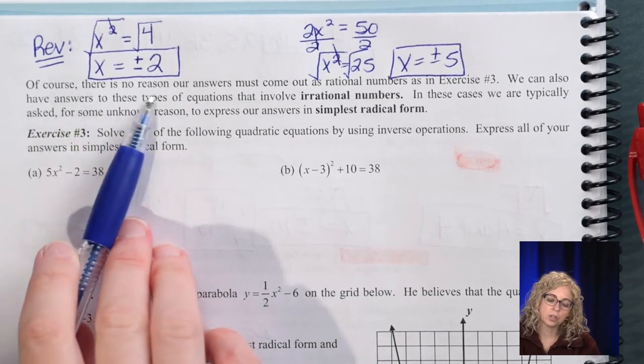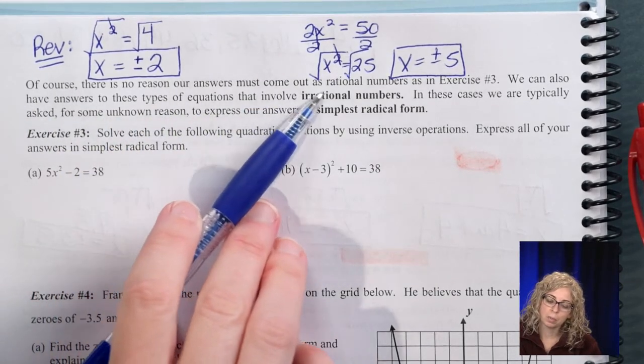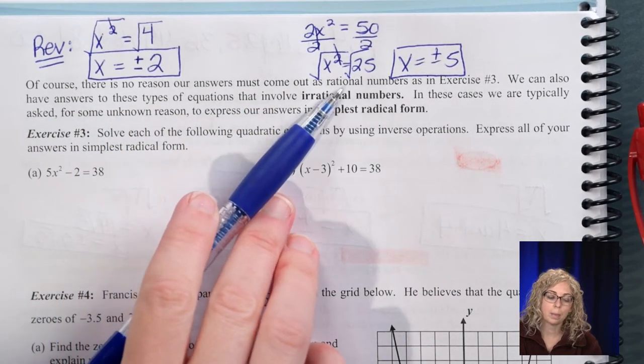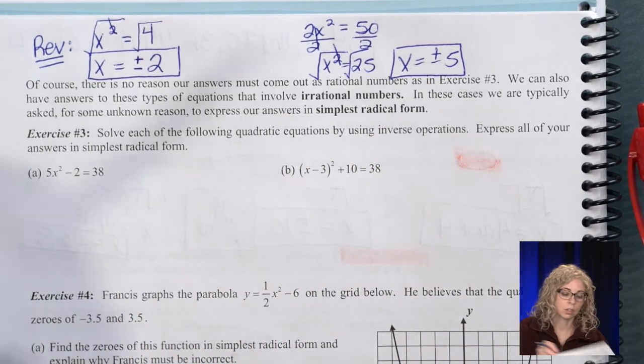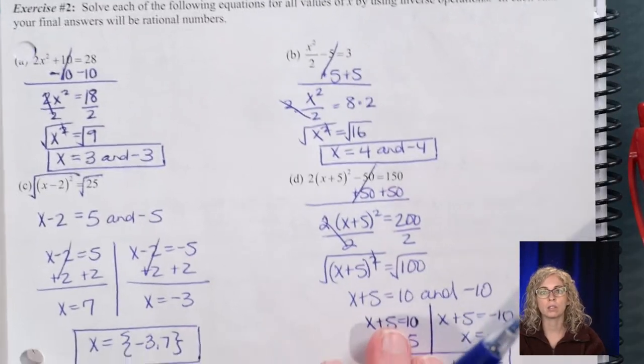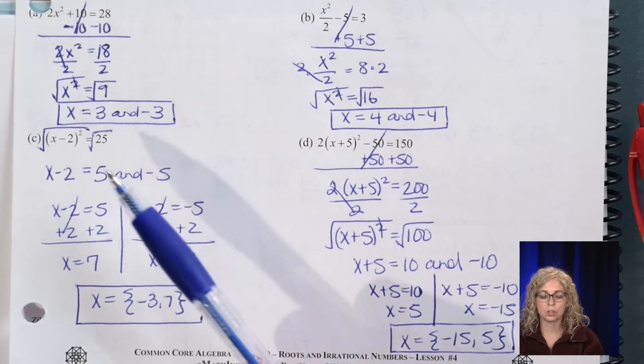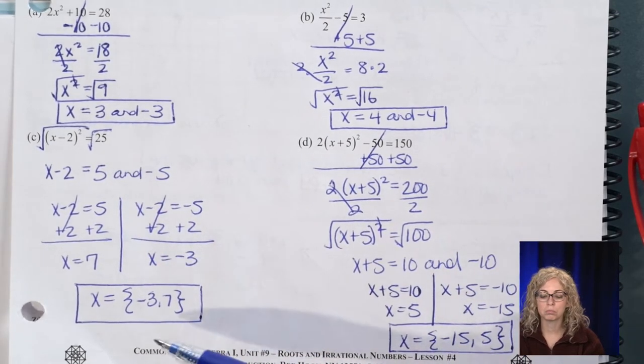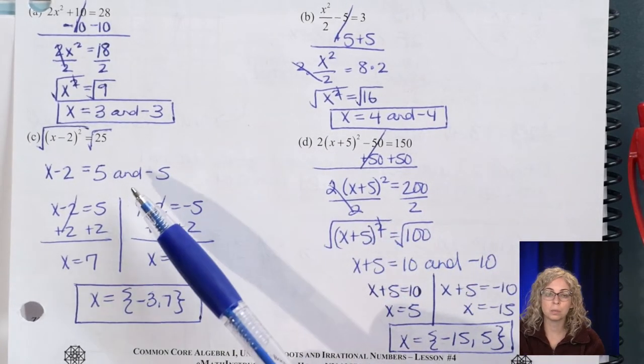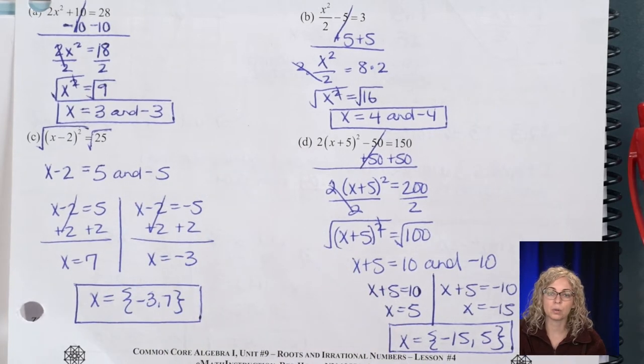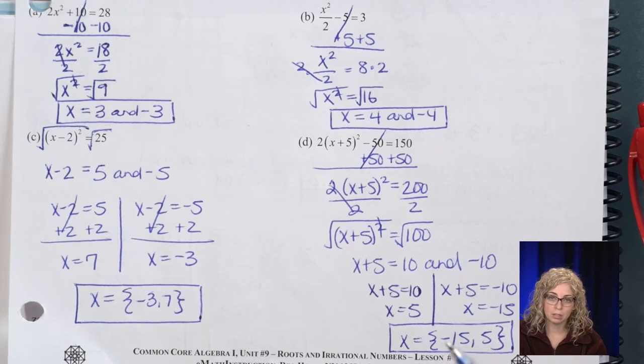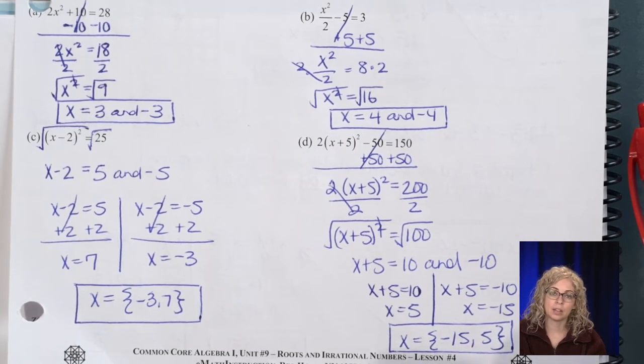So reading, he says, of course there's no reason our answers must come out as rational. So on the previous note page, if we remind ourselves, all of our answers were whole numbers. And whole numbers are rational. There's no decimal there, but we can put a .0. So those are decimals that do not repeat, but they end. And decimals that end are rational.